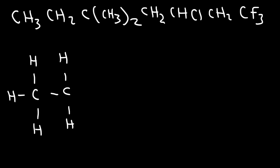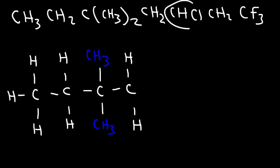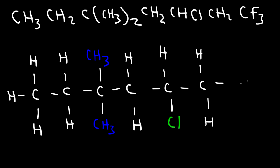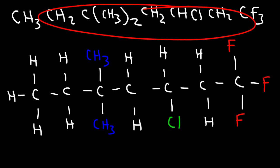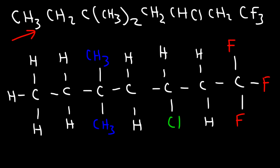And then we have another carbon with two methyl groups, which I'm going to highlight in blue. And then there's a CH2 group — a carbon with two hydrogens. And then we have CHCl, so a carbon with a hydrogen and a chlorine atom, which I'll highlight in green. And then a CH2, and then CF3 — so the last carbon has three fluorine atoms. And that's how you write the Kekulé structure, or the expanded structural formula, for this particular molecule.